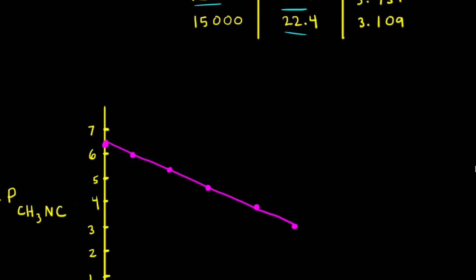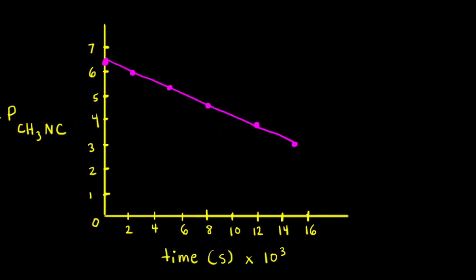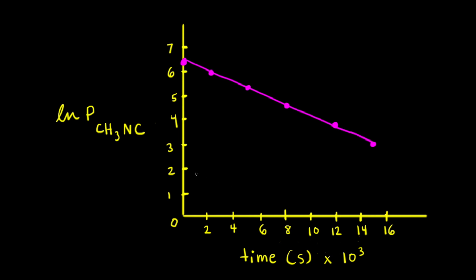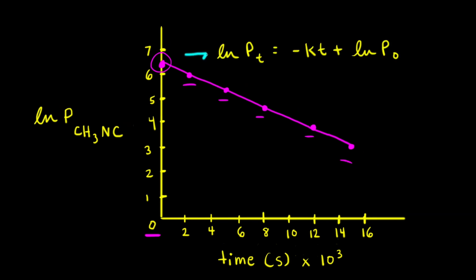I've already graphed the data. When time equals 0 seconds, the first point is 6.219, and the other data points are plotted on the graph. Here is the integrated rate law for a first-order reaction written with pressures instead of concentrations: the natural log of the pressure of methyl isonitrile on the y-axis and time on the x-axis. The slope of this line should be equal to the negative of the rate constant k.